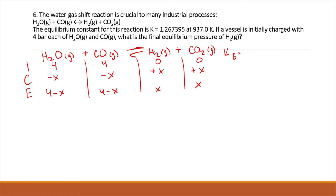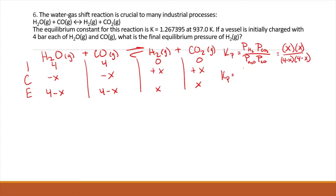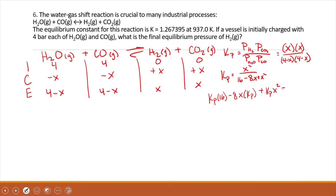Our Kp equation is the partial pressure of H2 times the partial pressure of CO2 divided by the partial pressure of water times the partial pressure of carbon monoxide. Substituting in, this gives us X times X over (4 minus X) times (4 minus X), which becomes X squared divided by 16 minus 8X plus X squared.